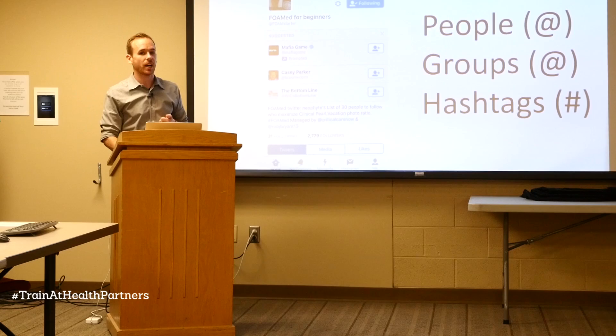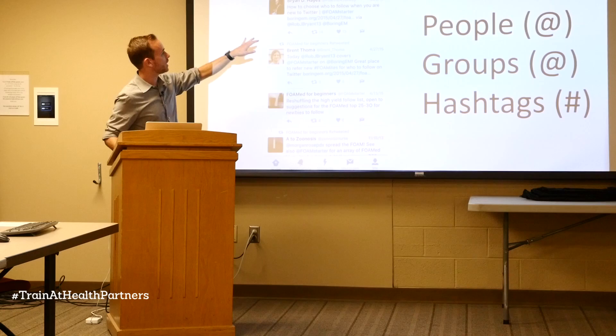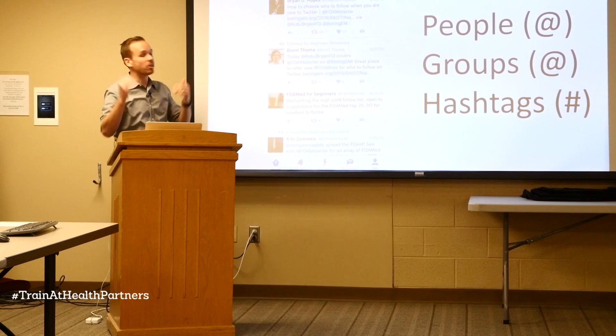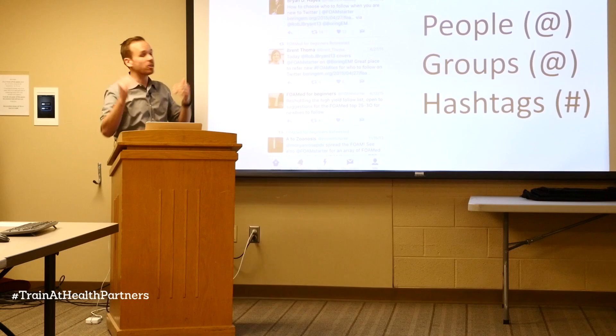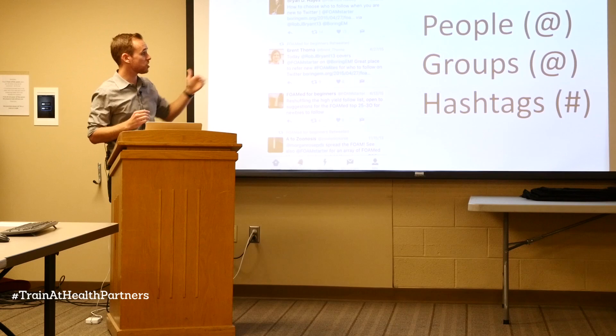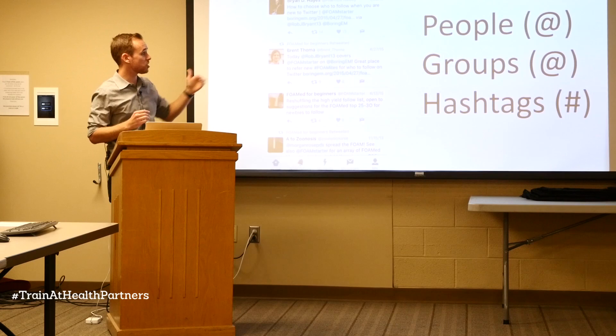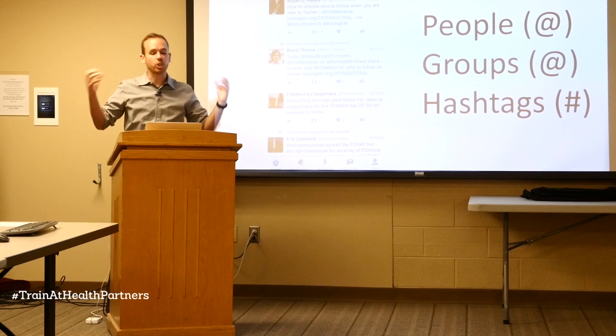Here's an example of some tweets and how they typically look. One of the greatest ways to discover other people is to start following maybe five or six people you know within your profession. Start looking at their tweets and you'll see other accounts and hashtags — like FOAMed starter or Boring EM. If you start clicking on those individually, it just keeps expanding the list of things you can add to your timeline, accumulating people, groups, and hashtag resources.